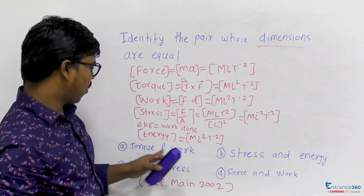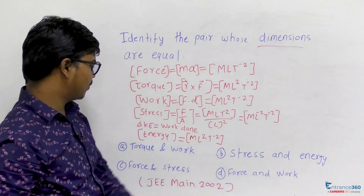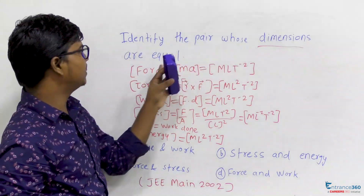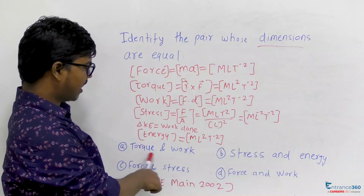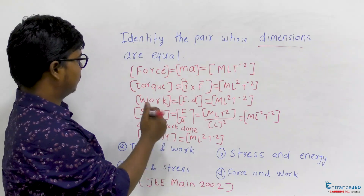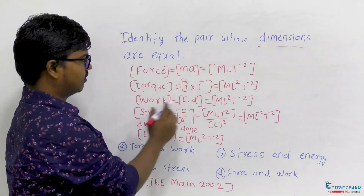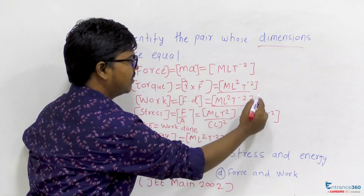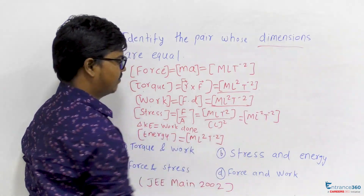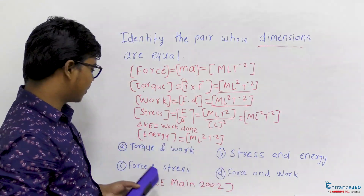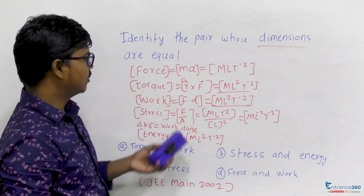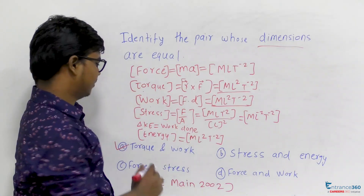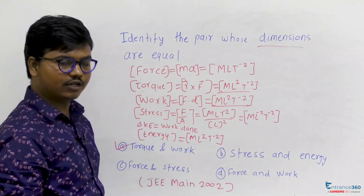We have found all the dimensions for the quantities in the options. Comparing the pairs, torque and work both have the dimension M L² T minus 2, while the other pairs have different dimensions. So the correct answer is option A. Thank you, students.